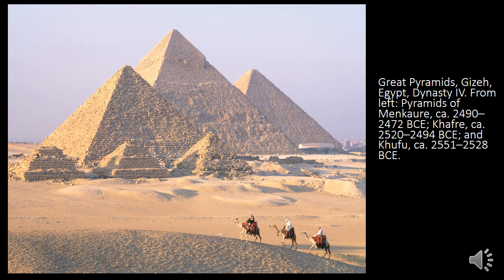Let's move on to the next big step in funerary architecture — what most people think about when they think about ancient Egypt: the Great Pyramids of Giza. Here we see them in a nice panoramic shot looking out across the desert. There are three pyramids, all a little different in size. We have the pyramid of Menkaure, Khafre, and Khufu. There's a little bit of controversy over which one belongs to which pharaoh, but this is obviously just the most spectacular thing we can associate with ancient Egypt and for good reason. You see a couple of smaller step pyramids in the foreground to give us a sense of scale.